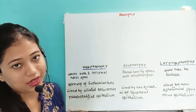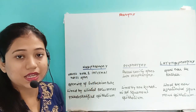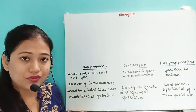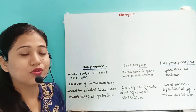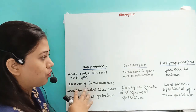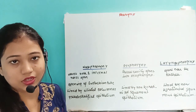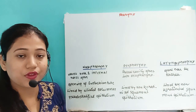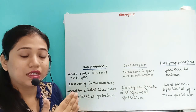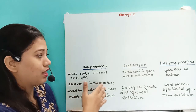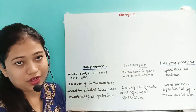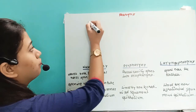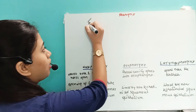The next part after the buccal cavity is the pharynx. The pharynx has three parts: the nasopharynx, the laryngopharynx, and the oropharynx.